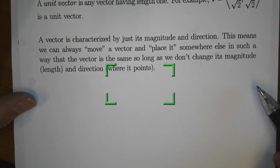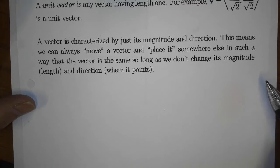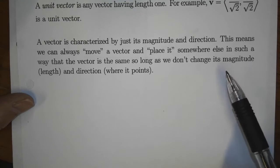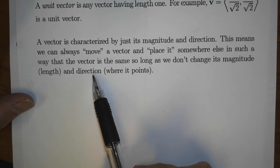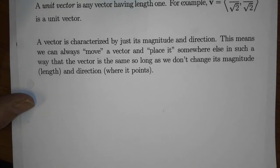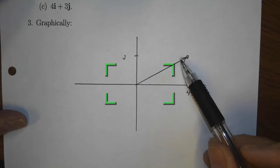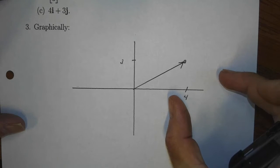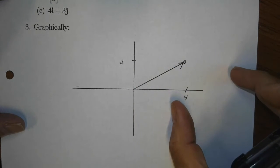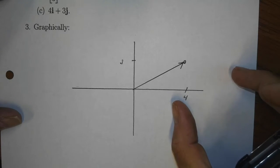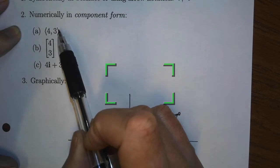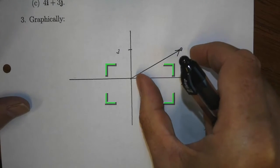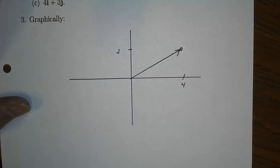A vector is characterized by just its magnitude and direction. This means we can always move a vector and place it somewhere else, so long as we don't change its length or direction, and we consider it to be the same vector. That's why we use angle bracket notation rather than parentheses — parentheses would indicate just a point, whereas we want to indicate a vector which could be moved around if needed.